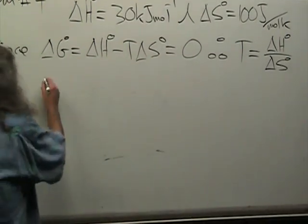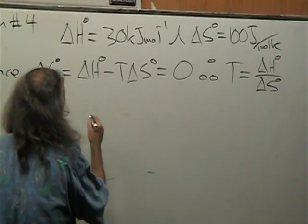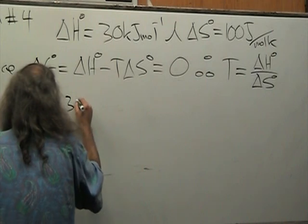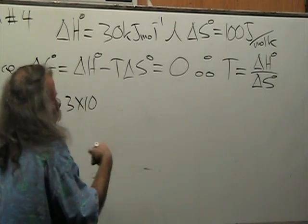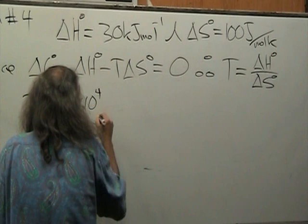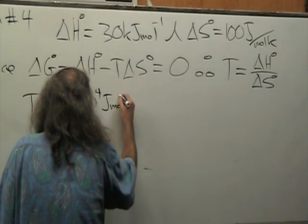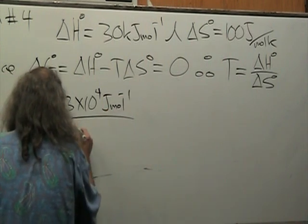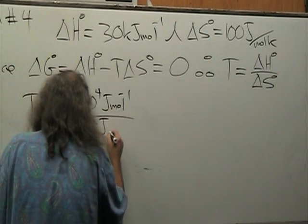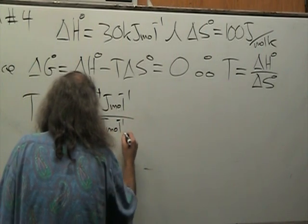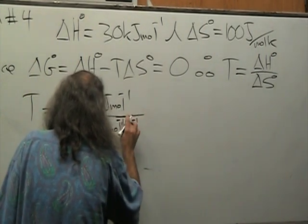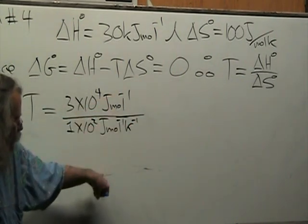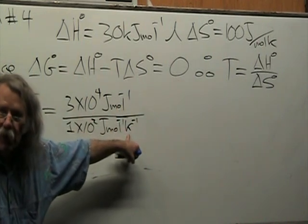So the temperature is going to be equal to - let's write this - I'm going to write it as 3×10⁴ joules per mole divided by 1×10² joules per mole Kelvin.